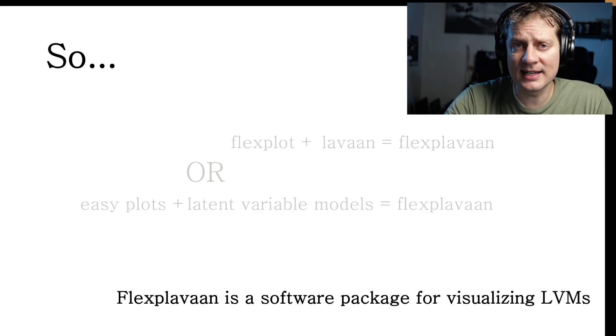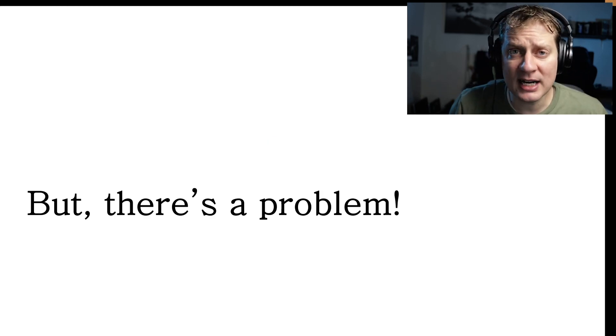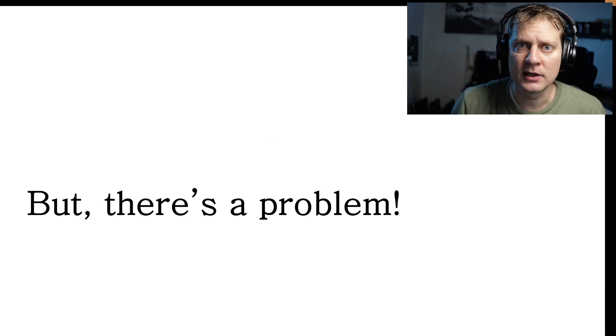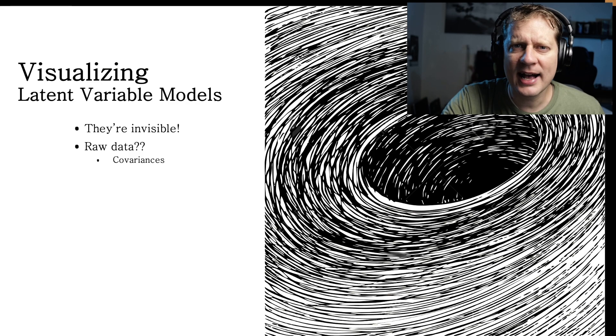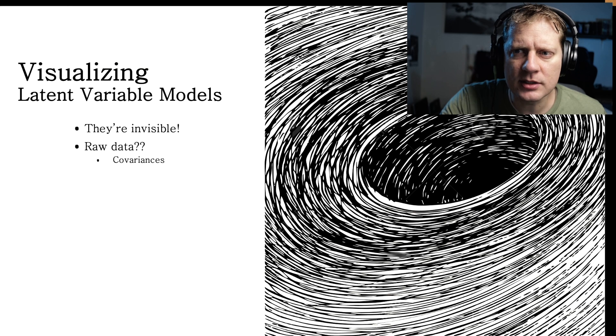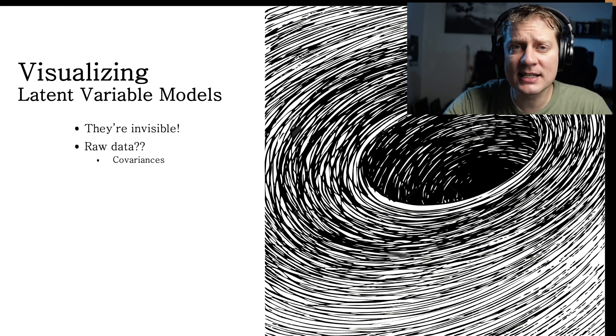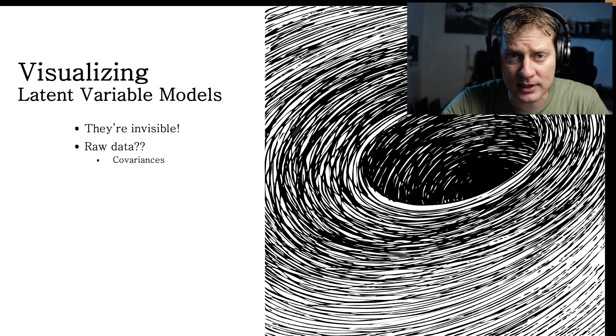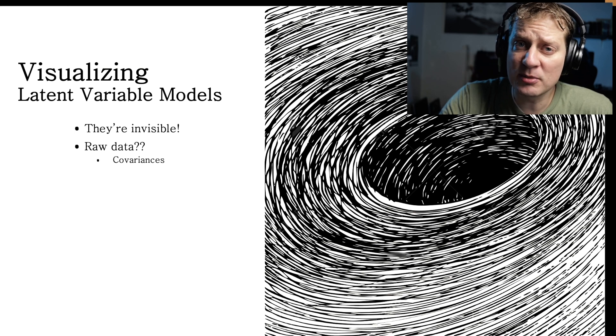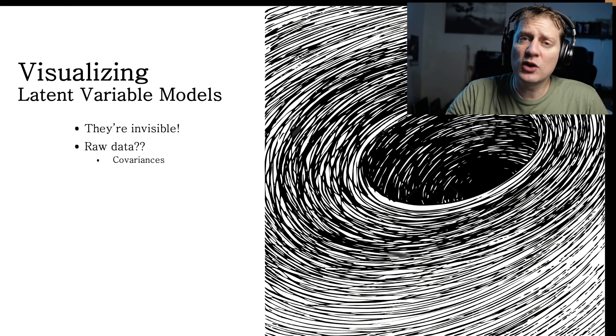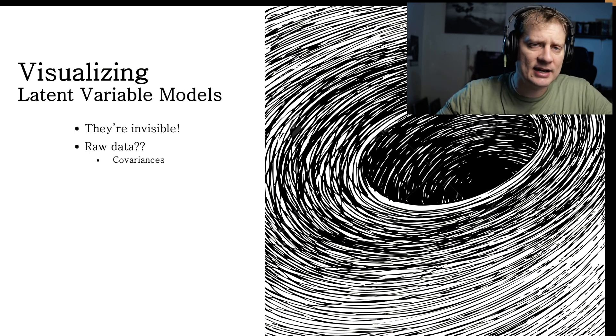In other words, FlexPlavon is software designed to make it easy to visualize latent variable models or LVMs as I will call them. But when you are trying to visualize latent variable models, there is one massive, huge, ginormous problem. How do you visualize latent variables? They're freaking invisible. By definition, they are unobserved. How do you visualize something that is unobserved? One of the core characteristics of FlexPlot is it wants to visualize raw data, the raw data points. But a lot of people, when they are using latent variable models, are not using the raw data. They are using the covariances to fit their model. If you have no idea what I'm talking about, that's okay. Eventually, someday, I will do a course series on latent variable models.